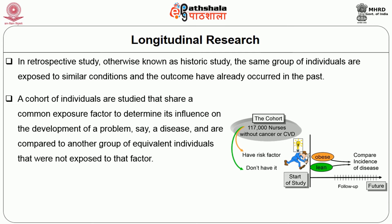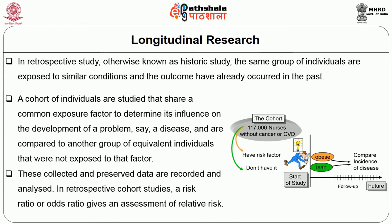A cohort of individuals are studied that share a common exposure factor to determine its influence on the development of a problem, say a disease, and are compared to another group of equivalent individuals that were not exposed to that factor. These collected and preserved data are recorded and analyzed. In retrospective cohort studies, a risk ratio or odds ratio gives an assessment of relative risk.